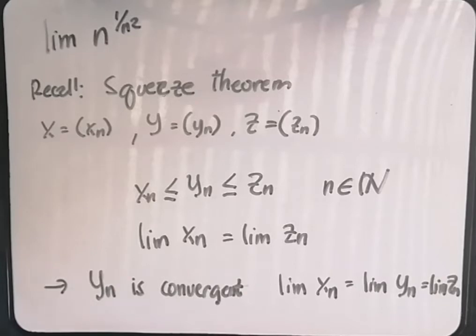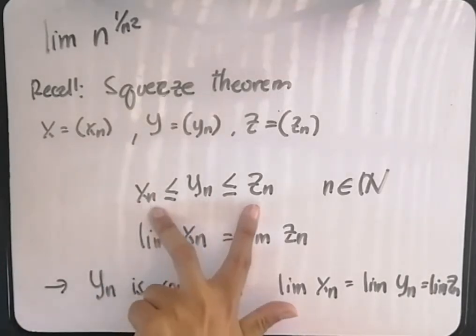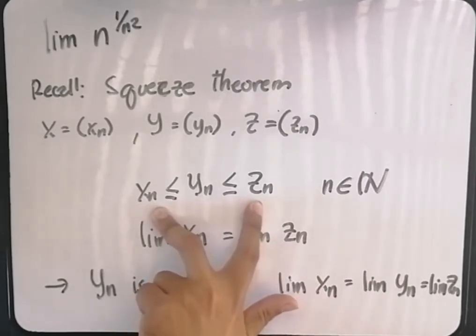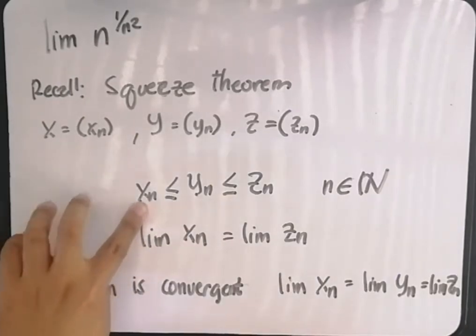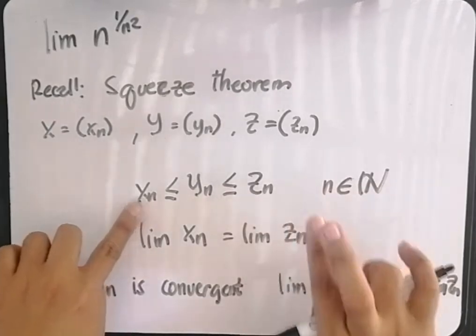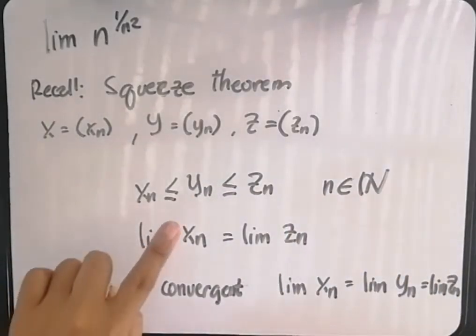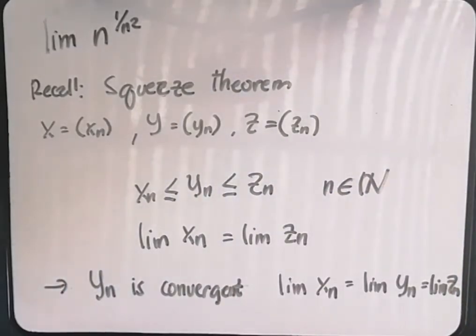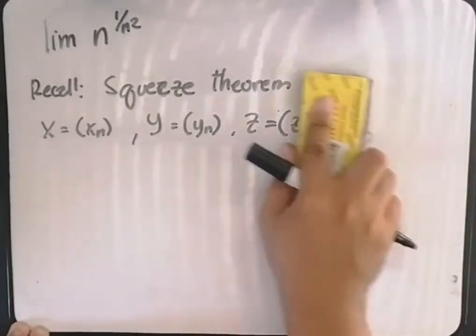So kung meron tayong isang sequence na sandwich or na squeeze sa gitna ng dalawa pang sequence, at alam natin na yung limit ng sequence na nandito sa gilid, dalawang gilid, ay pareho, then sinasabi niya dyan na yung limit nung nasa gitna parehas lang nung nandoon sa dalawang gilid. So gagamitin natin yan para i-show yung limit ng n raised to 1 over n squared.